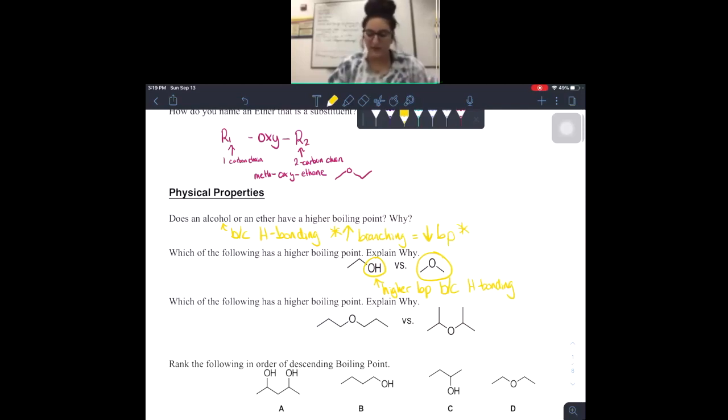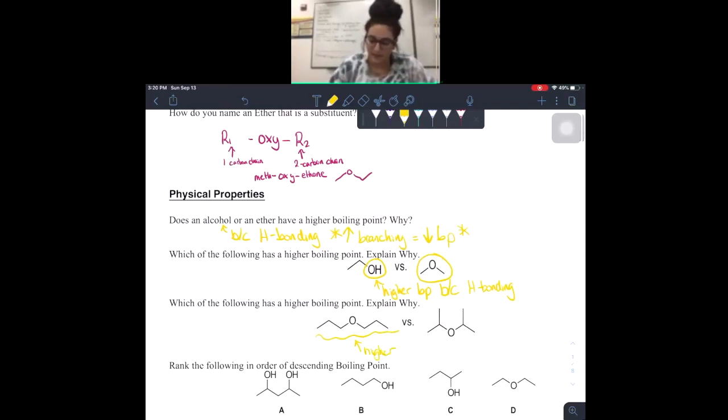So on to the next one. Which of the following will have a higher boiling point? The one on the left or the one on the right? Keep in mind, we were talking about how the more branching you have, the lower the boiling point is going to be. So which one has more branching? The one on the right. So the one on the left is going to have the higher boiling point because it has less branching. Or in this case, it doesn't actually have any branching.